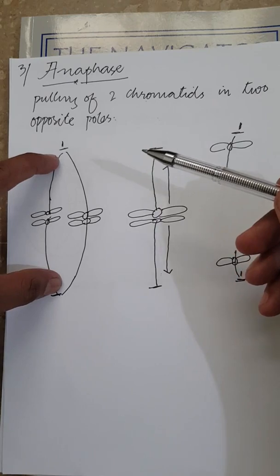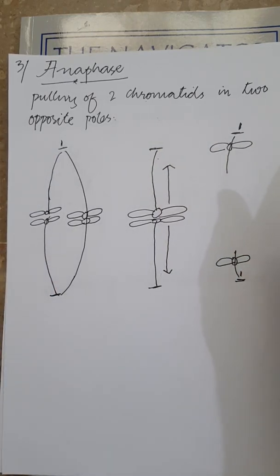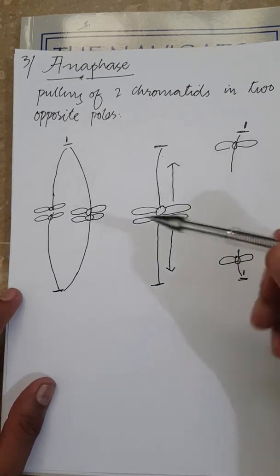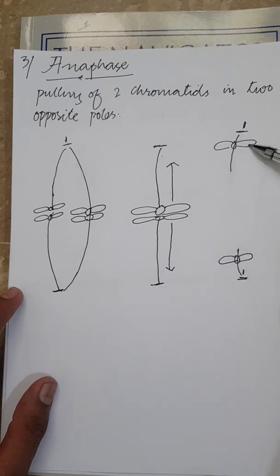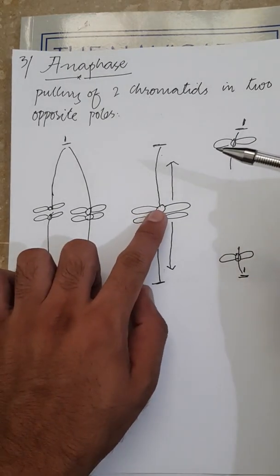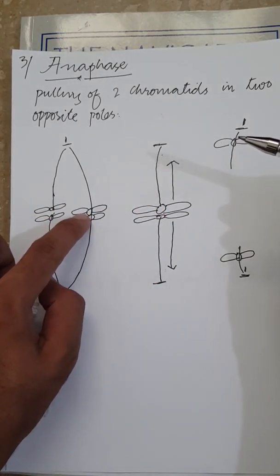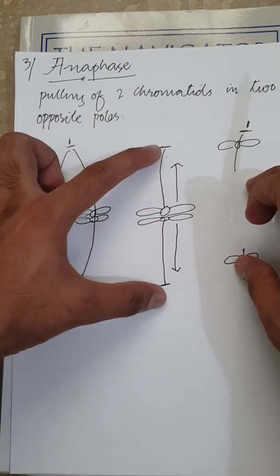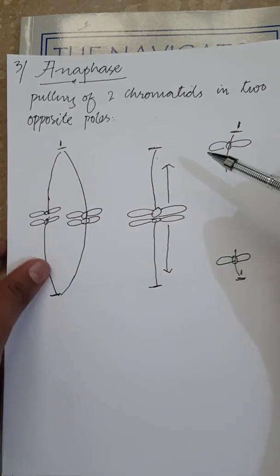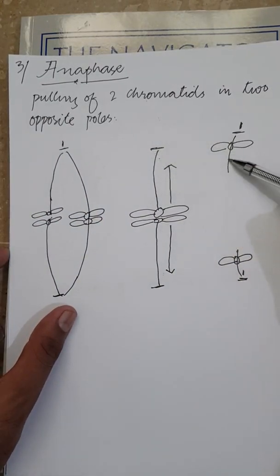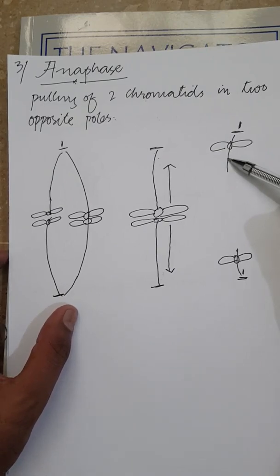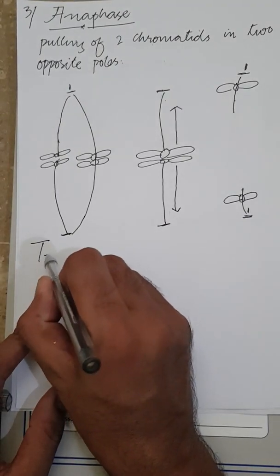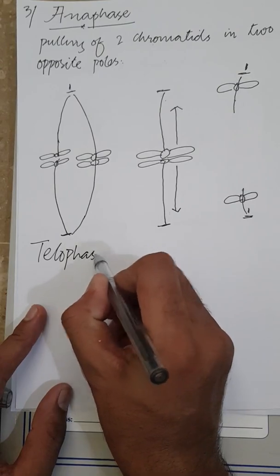As you can see in the book, it is clearly written that in anaphase there will be only one thing happening, and that is the pulling of the two sister chromatids from one another. This is one chromosome; by the end of metaphase they split. In anaphase they separate from one another, and what pulls them is the microtubule arising from the centriole. This is the only thing which will happen in anaphase.